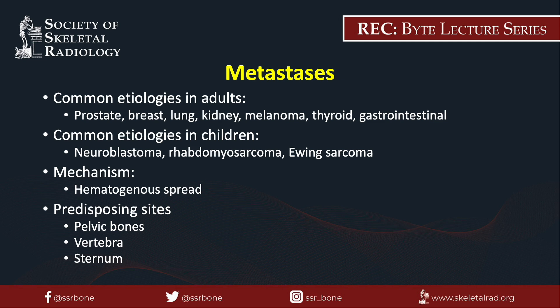Metastasis is a very common cause of bone marrow replacement process. Common etiologies in adults include prostate, breast, lung, renal cell, melanoma, thyroid, and GI malignancies. Common etiologies in children include neuroblastoma, rhabdomyosarcoma, and Ewing sarcoma. Metastases usually spread hematogenously, and the sites commonly afflicted are those rich in vascularity and red marrow — usually the pelvis, vertebra, and sternum.